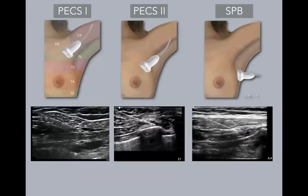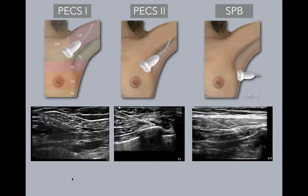The PECS series was basically trying to block the hemithorax and obtain pain management, obtaining different images. We were moving from medial and proximal to lateral and distal. The PECS1 is more or less at the mid-clavicular line towards the lateral third of the clavicle, the PECS2 is in the anterior axillary line, and the serratus plane block (SPB) is in the posterior axillary line. At those three levels, you can see the sonoanatomy changes, so you need to be very familiar with how they look.